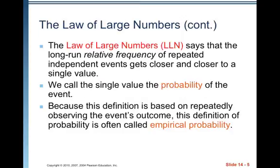The law of large numbers, or LLN, says that the long-run relative frequency of repeated independent events gets closer and closer to a single value. We call that single value the probability of the event. Because this definition is based on repeatedly observing the event's outcome, this definition of probability is often called empirical probability. Remember, empirical is always in reference to data — it's always in reference to keeping track of what actually happens. So the probability is the single value that is the long-run relative frequency of repeated independent events.